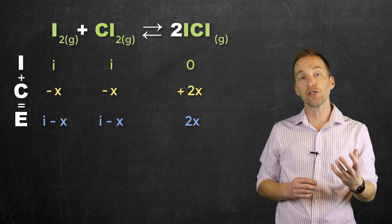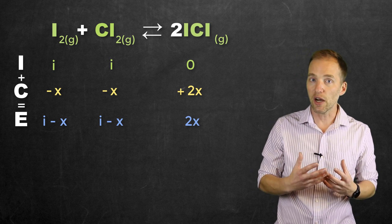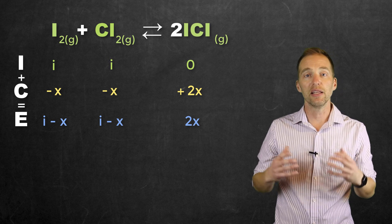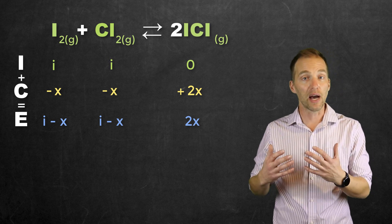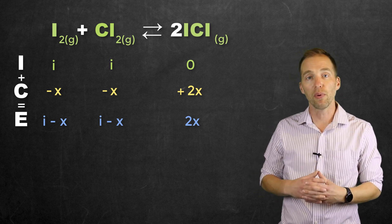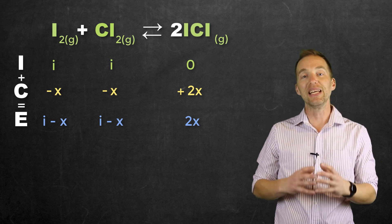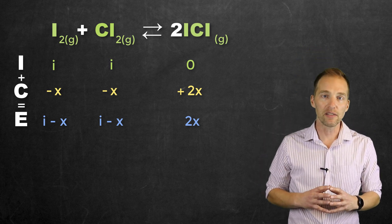So we're going to see there's going to be an initial concentration minus the change in concentration for the reactants, and the initial concentration of zero, plus the change in concentration for the products, is how we're going to set up the E row of our ice table.